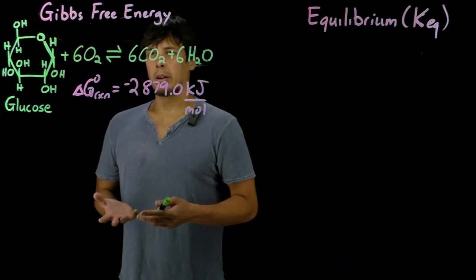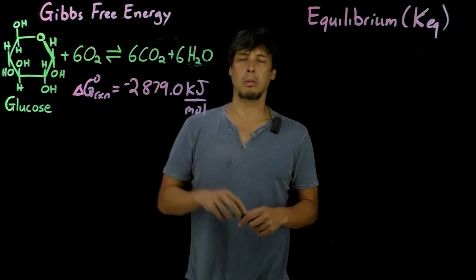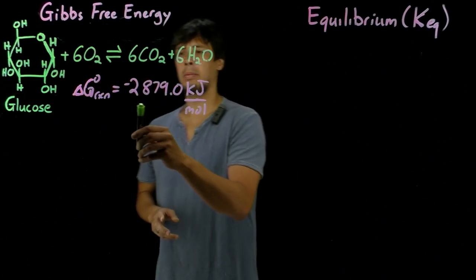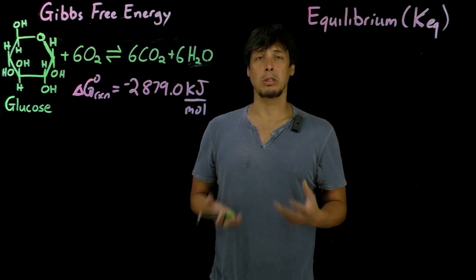Now that we've calculated our changing Gibbs free energy for our glucose combustion to form carbon dioxide and water, we know that this is negative and that the reaction is therefore favored or it's spontaneous.